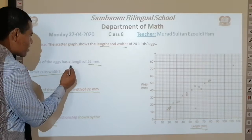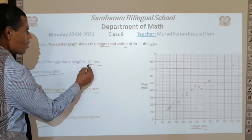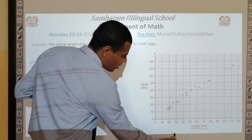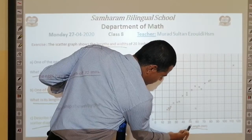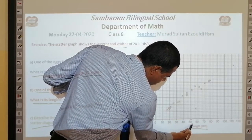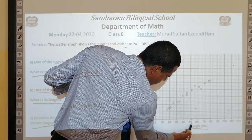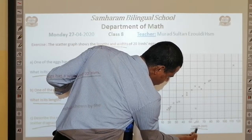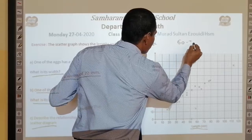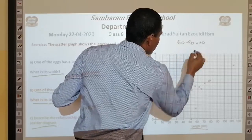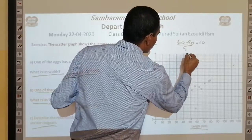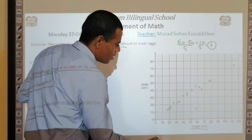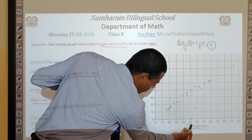One of the eggs has a length of 52 mm. This is the length axis. This is 50, and this is 52. From 60 to 50, the difference is 10. I will divide this by 5, so each square represents 2 mm.